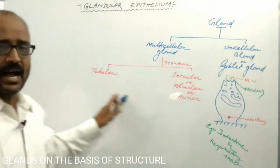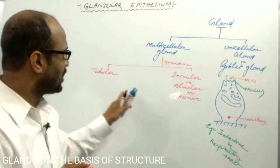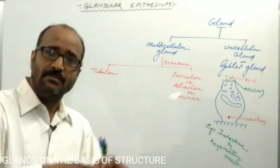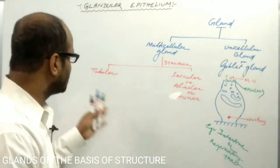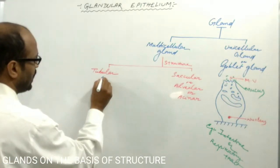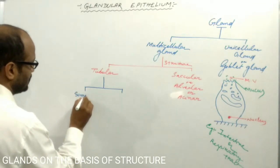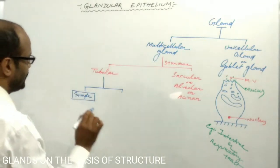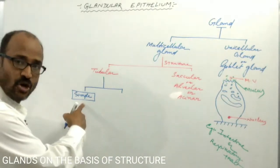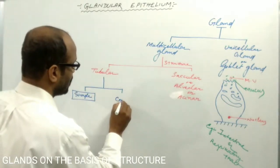If these glands have a single main duct, the gland is known as the simple gland. If these glands have several main ducts, they are known as the compound gland. So the tubular gland may be two types: it may be simple if there is a single main duct — which may be branched or unbranched — or it may be compound if several main ducts are present.